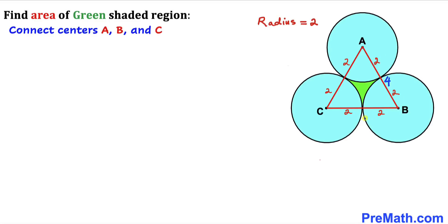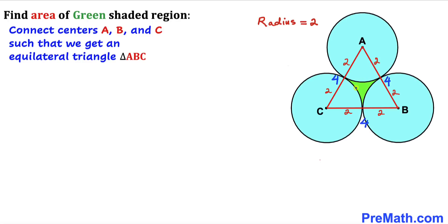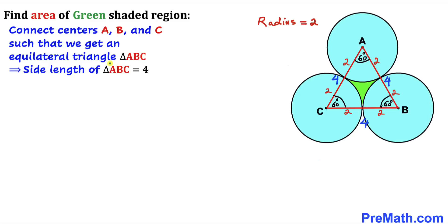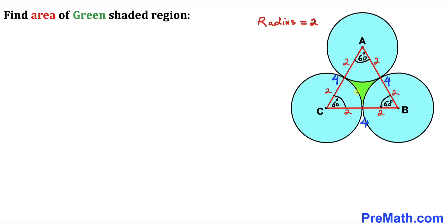Likewise, distance B to C is 4 units, and distance A to C is 4 units as well. So triangle ABC is an equilateral triangle since all side lengths are 4. We know all angles in an equilateral triangle are 60 degrees each — this is 60 degrees, this one is 60 degrees, this one is 60 degrees — and they add up to 180 degrees. The side length of triangle ABC is 4 units.